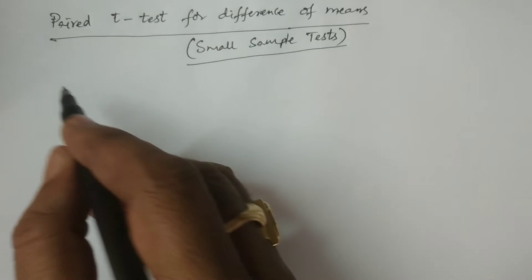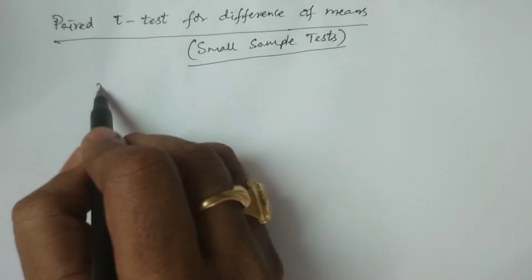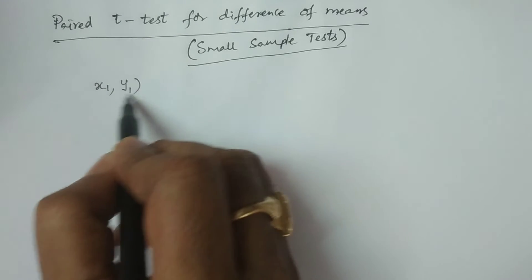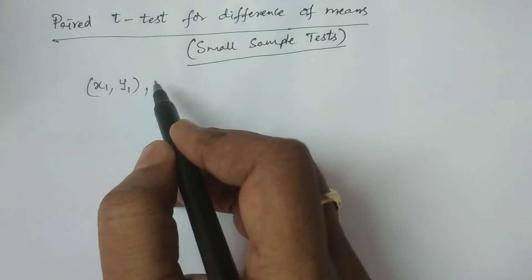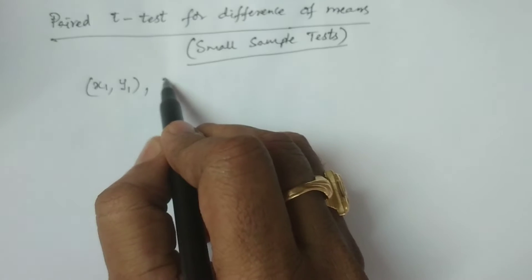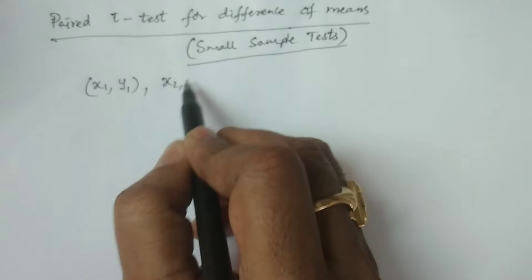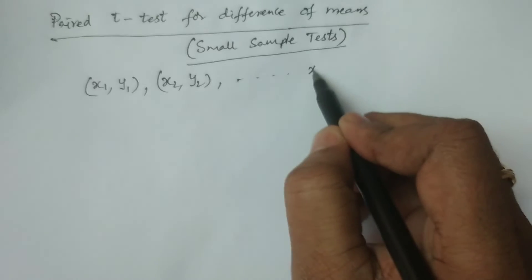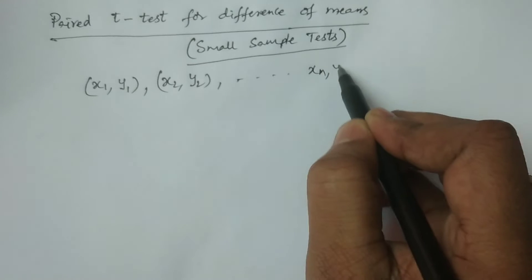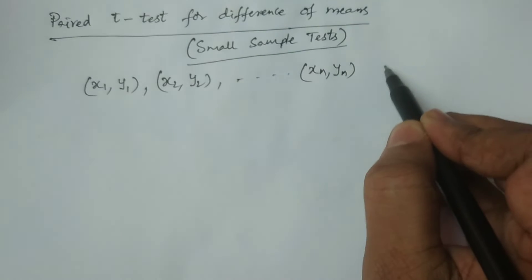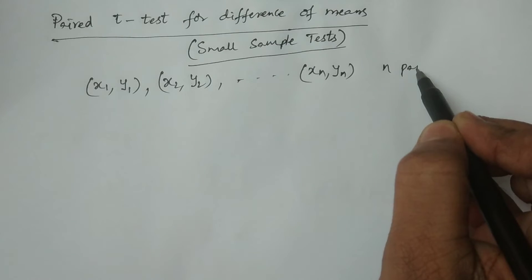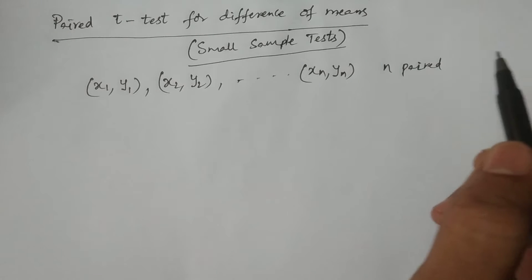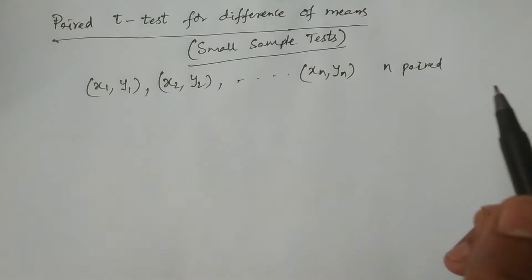Whereas here we consider one population. According to the one population's characteristics, a pair of observations are going to be observed: x1, y1; x2, y2; and so on. xn, yn are n paired observations that we have considered.